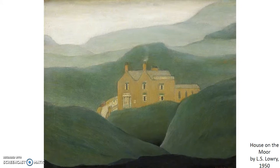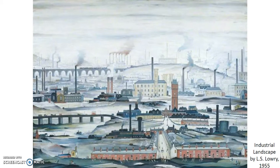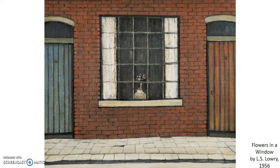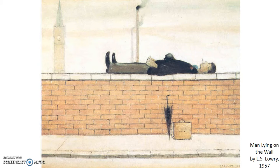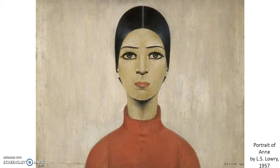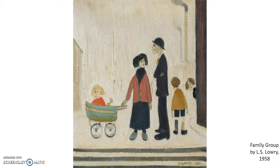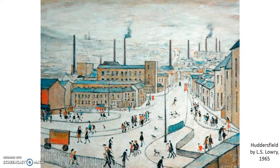We have Industrial Landscape painted in 1955. Here we have Flowers in the Window by L.S. Lowry in 1956, and Francis Street in Salford from 1957. Also from 1957 we have Man Lying on the Wall, and a portrait of Ann, painted in the same year. From 1958 there is the Family Group painting. And our final painting is of Huddersfield, painted by L.S. Lowry in 1965.